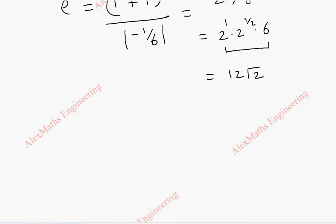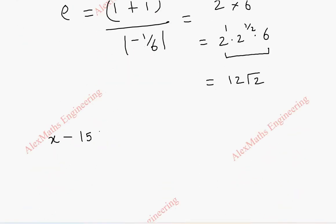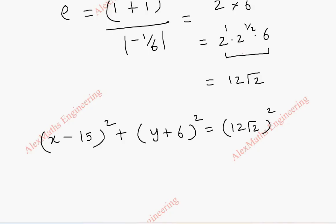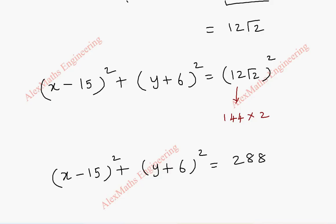Coming to the circle of curvature with x̄ = 15 and ȳ = −6: (x − 15)² + (y + 6)² = ρ² = (12√2)² = 288. So the final answer is (x − 15)² + (y + 6)² = 288. This is our circle of curvature.